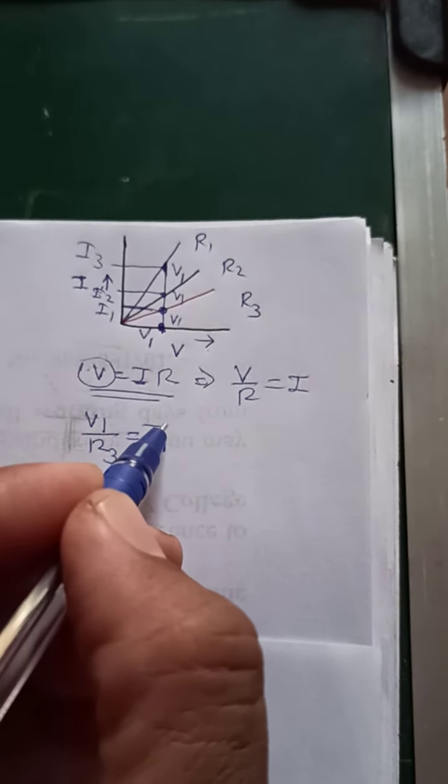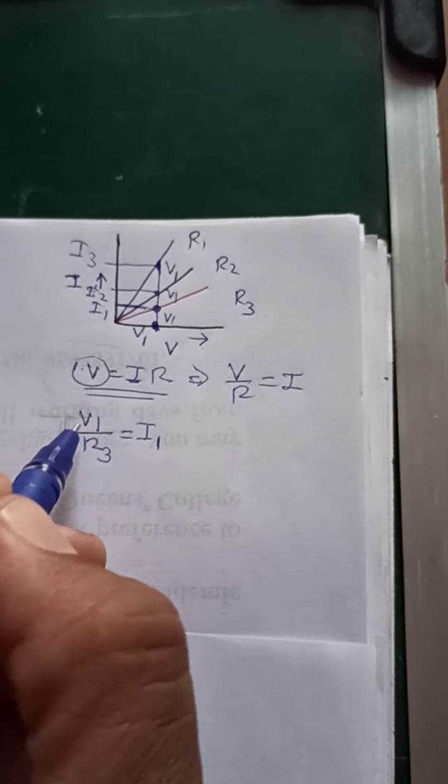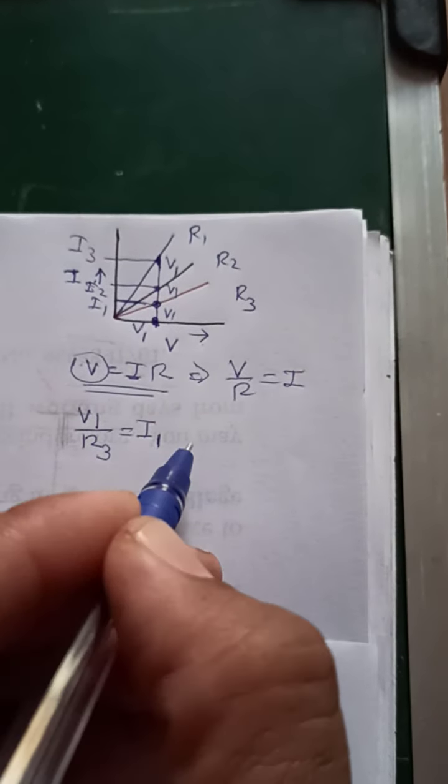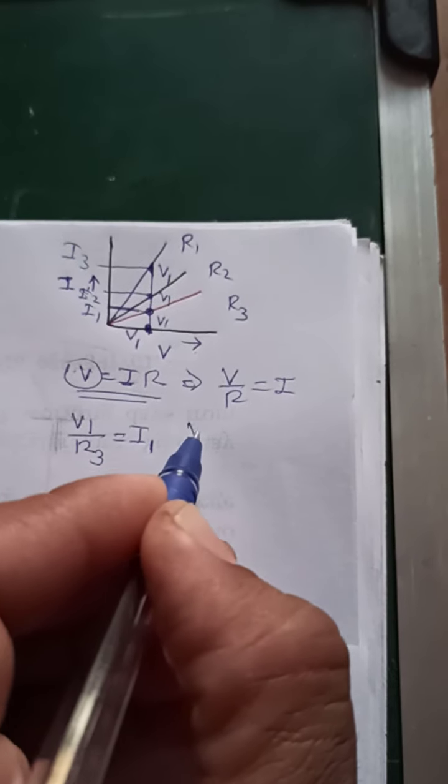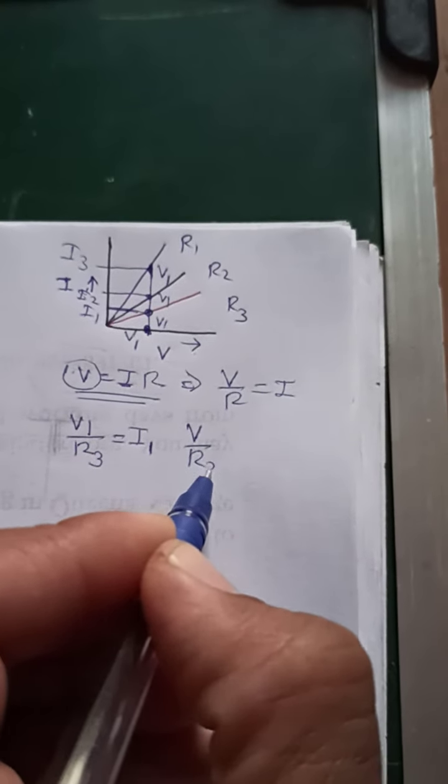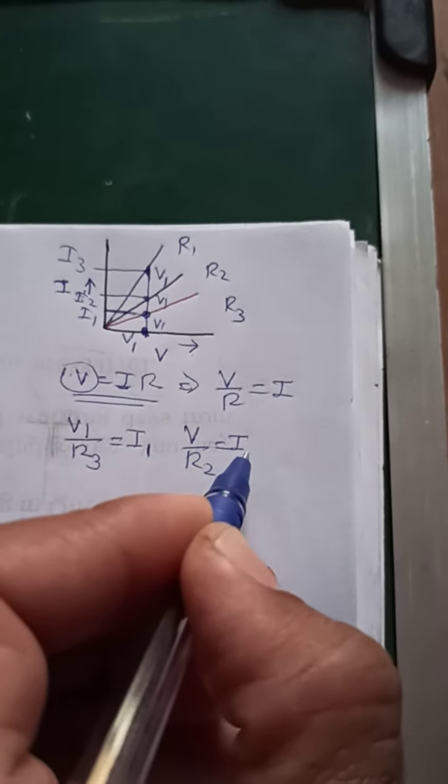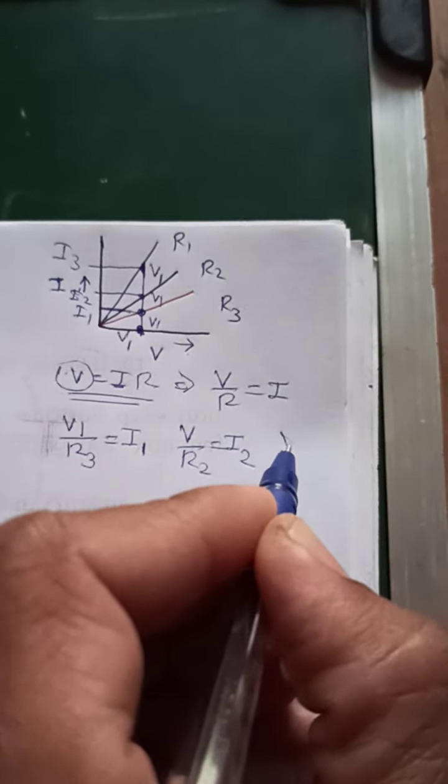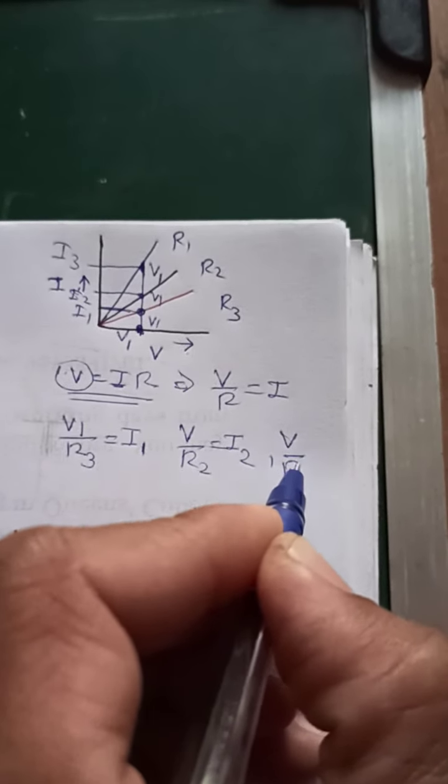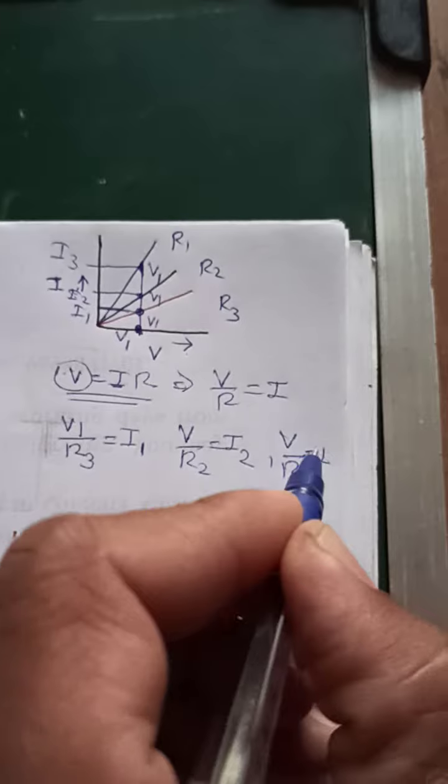You can see that I1's value is small and V is constant. So V divided by R3 equals I1, V divided by R2 equals I2, and V divided by R1 equals I3.